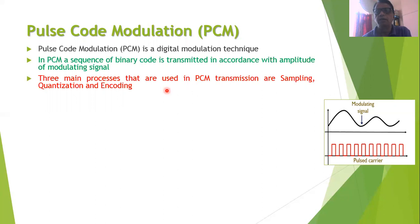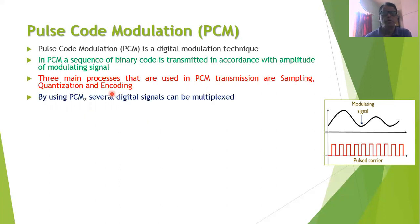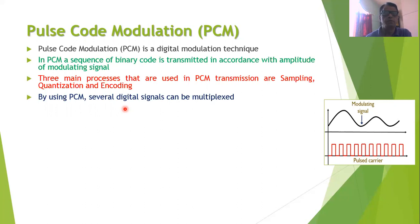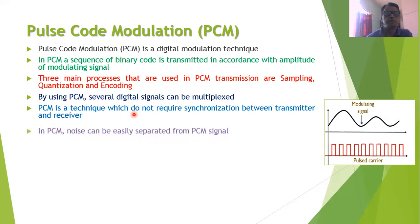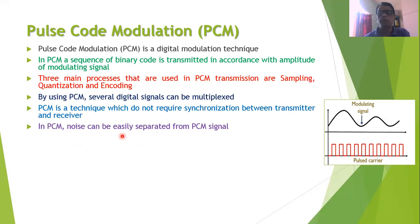In PCM transmission there are three main processes involved: sampling, quantization, and encoding. PCM is a very powerful digital technique and therefore several digital signals can be multiplexed, that is several digital signals can be transmitted on the same channel. PCM does not require any synchronization between transmitter and receiver, unlike PPM where synchronization is required. Since binary code is transmitted, noise can be easily separated from the required PCM signal.